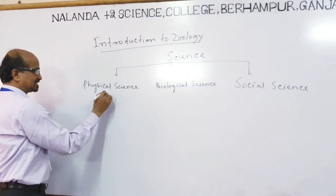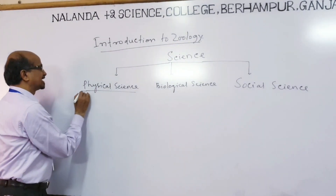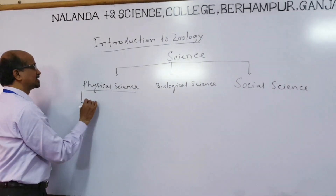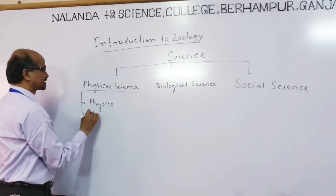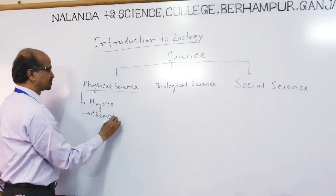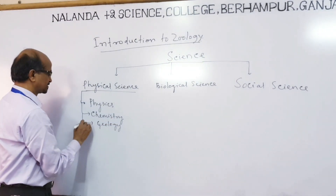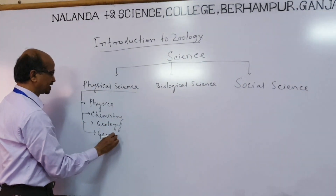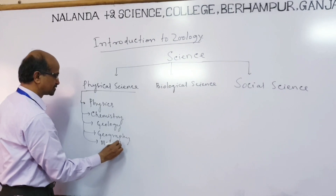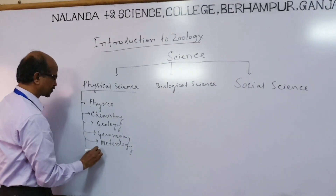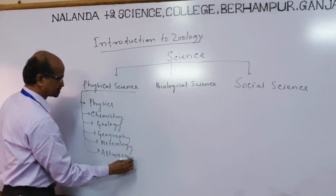Before knowing that, let you know what is Physical Science. Physical Science has branches — they include Physics, Chemistry, Geology, Geography, Meteorology, and Astronomy, etc.